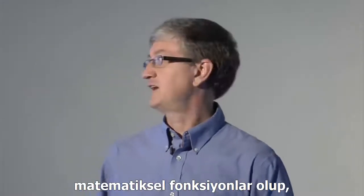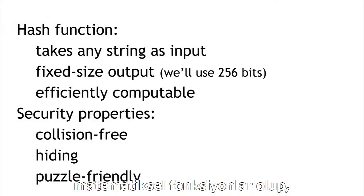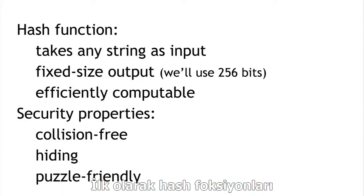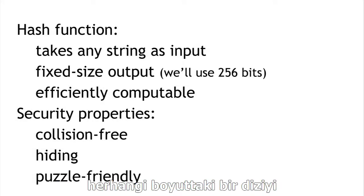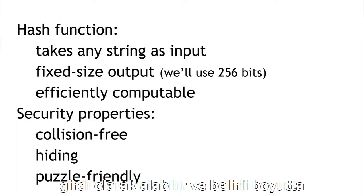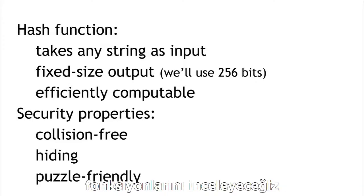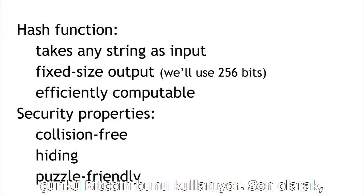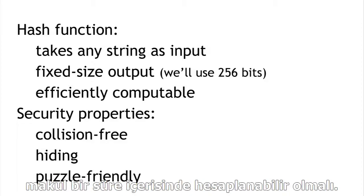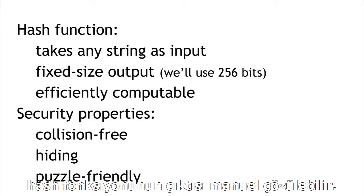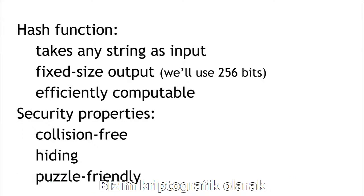A cryptographic hash function is a mathematical function, and it has three attributes. First, a hash function can take any string as input — absolutely any string of any size. It produces a fixed size output; we'll use 256 bits in this series of lectures, because that's what Bitcoin does. And it has to be efficiently computable, meaning given a string, in a reasonable length of time, you can figure out what the output is.